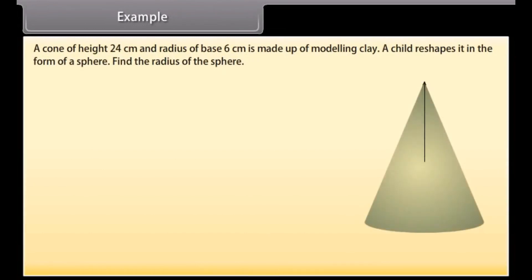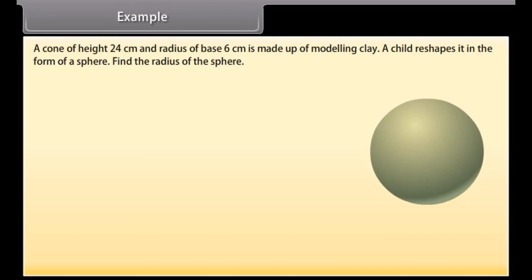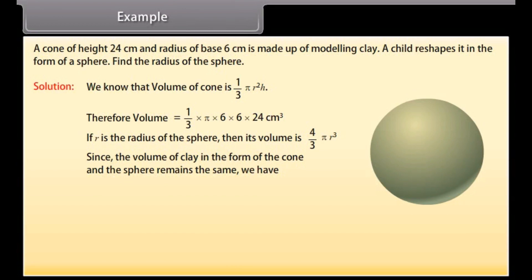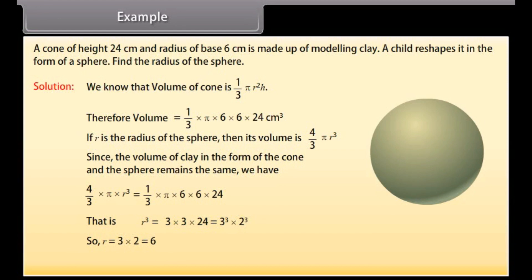Example. A cone of height 24 cm and radius of base 6 cm is made up of modeling clay. A child reshapes it in the form of a sphere. Find the radius of the sphere. Solution: Volume of cone = (1/3)·π·r²·h = (1/3)·π·6·6·24 cm³. If r is the radius of the sphere, its volume = (4/3)·π·r³. Since the volume of clay remains the same, solving gives r = 3 × 2 = 6 cm. Therefore, the radius of the sphere is 6 cm.